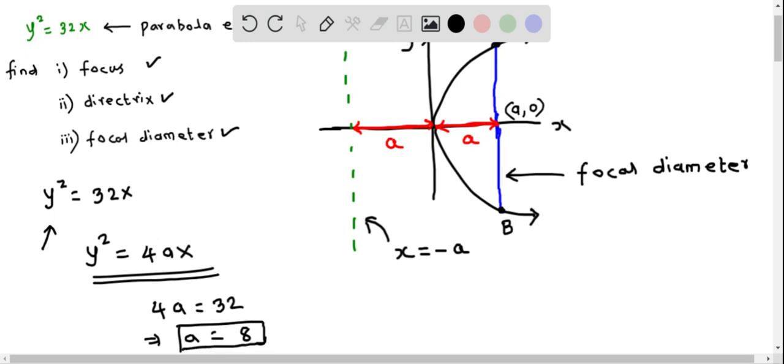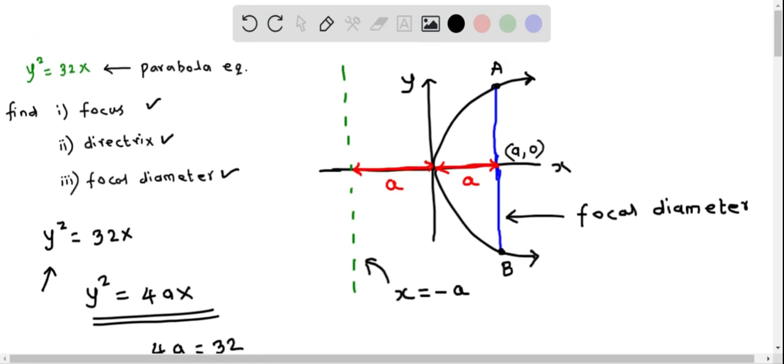So we found the value of a = 8, which means the focal distance is 8. Now let's look at this figure and try to understand these characteristics. The focus is basically a coordinate which is a units from the vertex of the parabola.